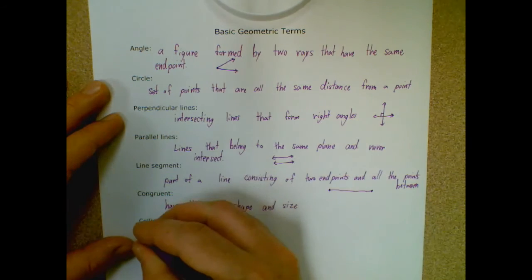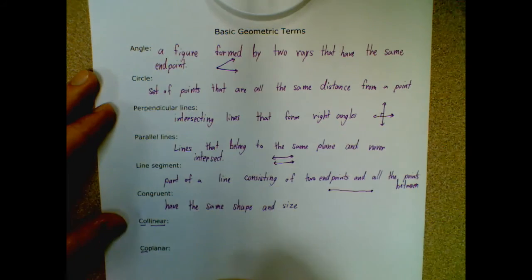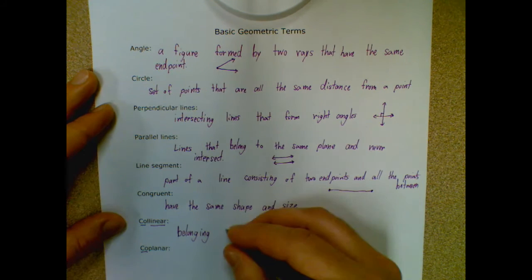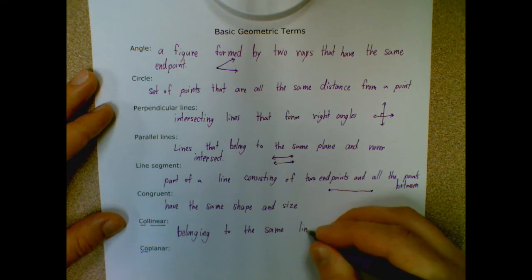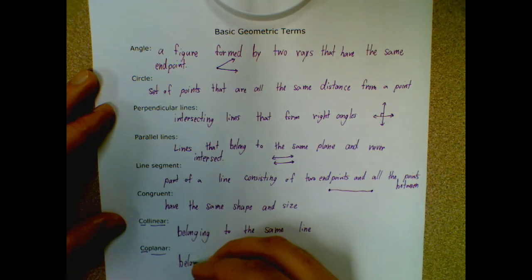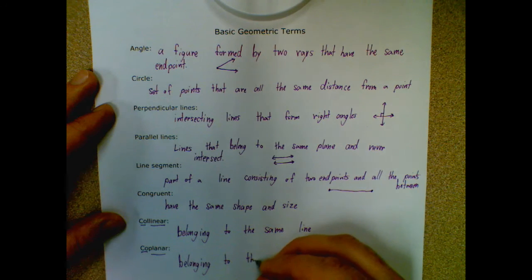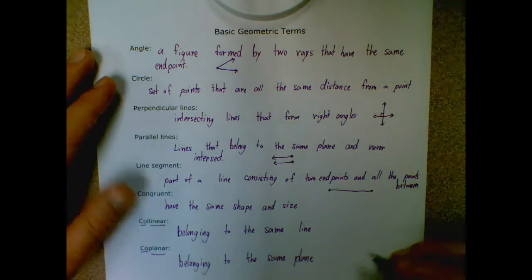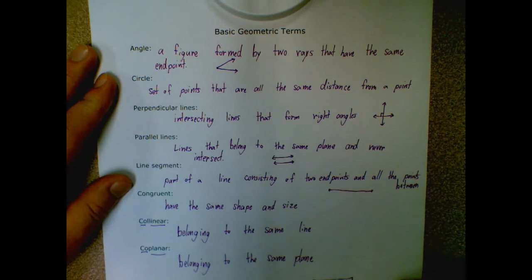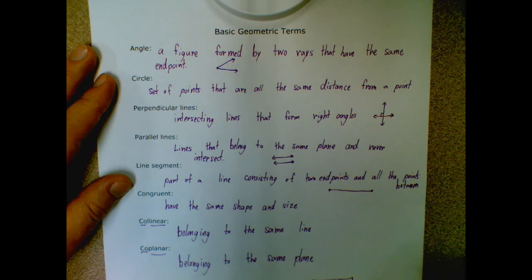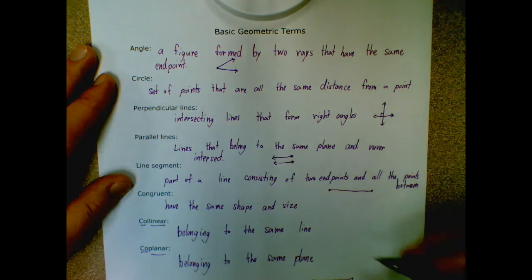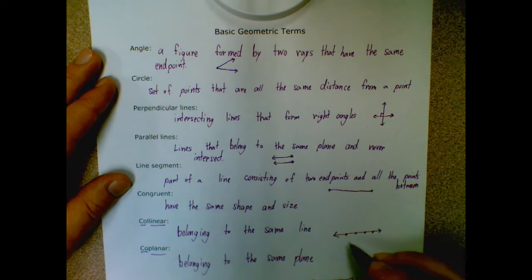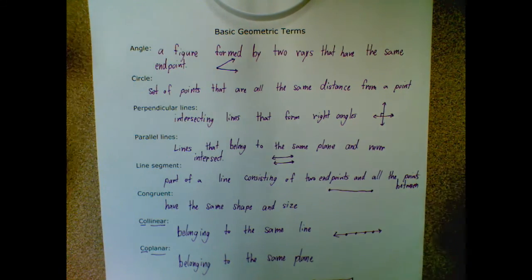Colinear and coplanar go together. The prefix 'co' in both of these means same. So colinear means belonging to the same line, and coplanar, likewise, means belonging to the same plane. A plane is like a sheet of paper — if you have a line that's on that sheet of paper and a point, those would be coplanar because they're on the same sheet. And for colinear, if I have a line here, I could say these four points are colinear because they're all on the same line.